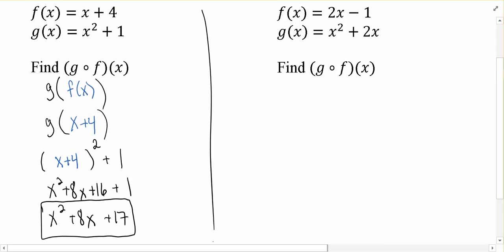Now, the second part of this example, we want to do g of f of x again. So again, that's going to be g of f of x. Now, in this case, f of x is 2x minus 1.